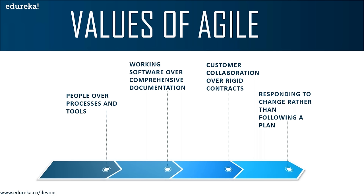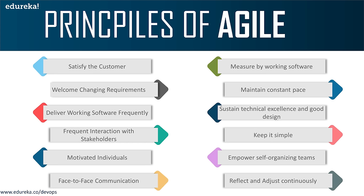There are two parts of the puzzle: benefit and value. Benefit is what you get right off the bat, and value is what you derive out of it. The principles of agile include: satisfied customer, welcome changing requirements, deliver working software frequently, frequent iterations with stakeholders, motivated individuals, face-to-face communications, measure by working software, maintain constant pace, sustain technical excellence and good design, keep it simple, empower self-organizing teams, and reflect and adjust continuously.